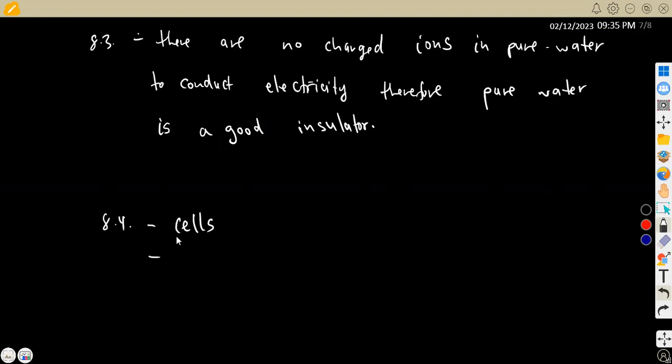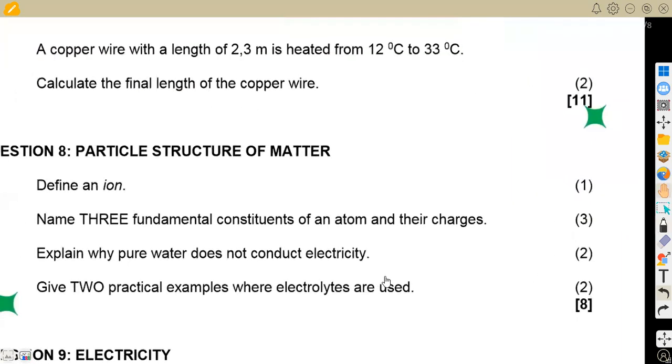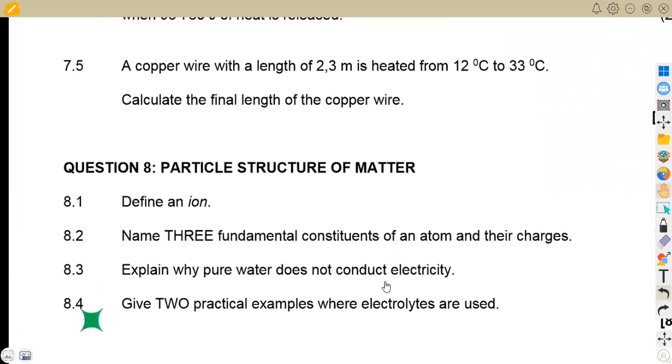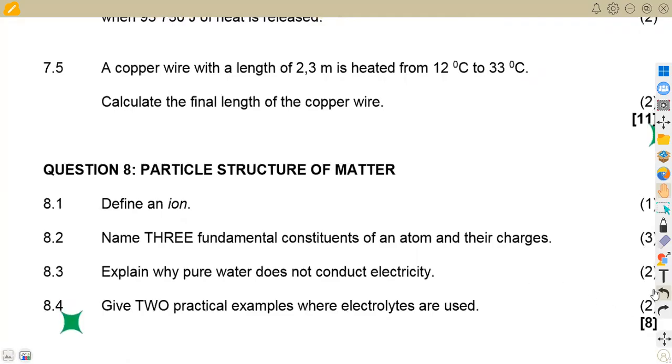So we have got electroplating, in this case. It can be used in part of corrosion. We can use this to extract materials from electrorefining processes. So there are so many that we can have that are actual examples where electrolytes are used. So that was actually two marks to mark a total of eight marks on particle structure and matter.